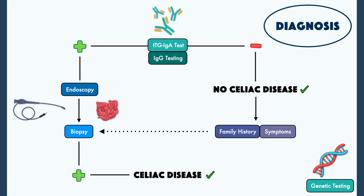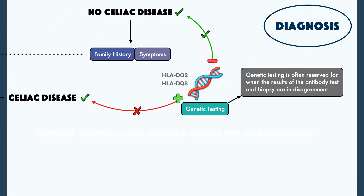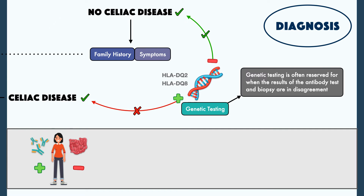Genetic testing is considered to be less reliable than both antibody testing and the biopsy. Celiac disease is hereditary, and a person must have the genes HLA-DQ2 or HLA-DQ8 to develop it. But many more people have those genes than will ever develop celiac disease in their lifetime. A positive genetic test doesn't allow for a diagnosis of celiac disease, and yet a negative genetic test is enough to rule it out. Genetic testing is often reserved for when the results of the antibody test and the biopsy are in disagreement, or if for some reason a biopsy is not feasible.